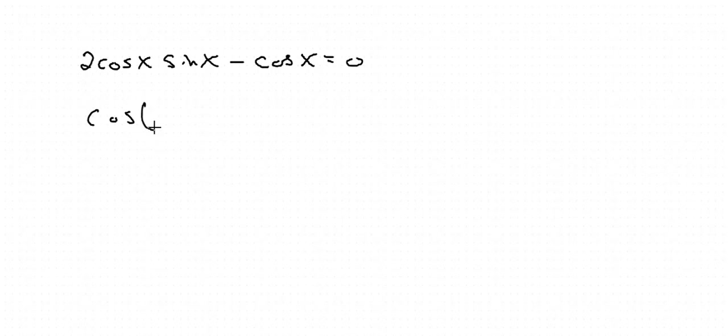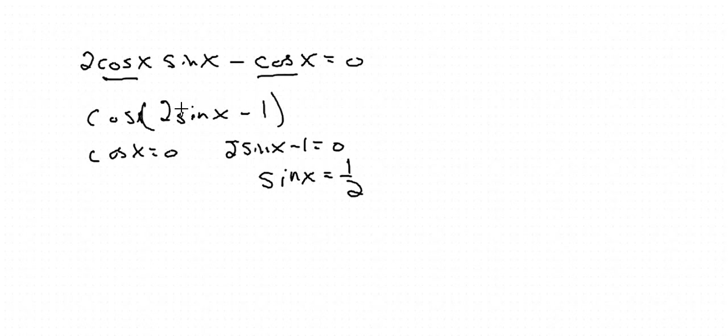So we factor that out first. When you're factoring out the cosine x, can you... Why is it 2 sine x minus 1? I'm going to factor a cosine out of here and a cosine out of there, right? So when I divide cosine out of this thing, what's left behind?